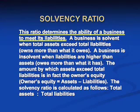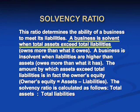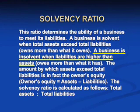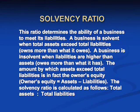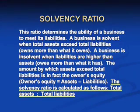Now it's very important to understand what these concepts mean. Liquidity is the ability to pay off short-term debt. The solvency ratio determines the ability of the business to meet its liabilities. A business is solvent when total assets exceed total liabilities — it owns more than it owes. A business is insolvent when liabilities are higher than assets. The amount by which assets exceed total liabilities is in fact the owner's equity, which is assets minus liabilities — from the accounting equation: assets equals owner's equity plus liabilities. The total solvency ratio is total assets to total liabilities.